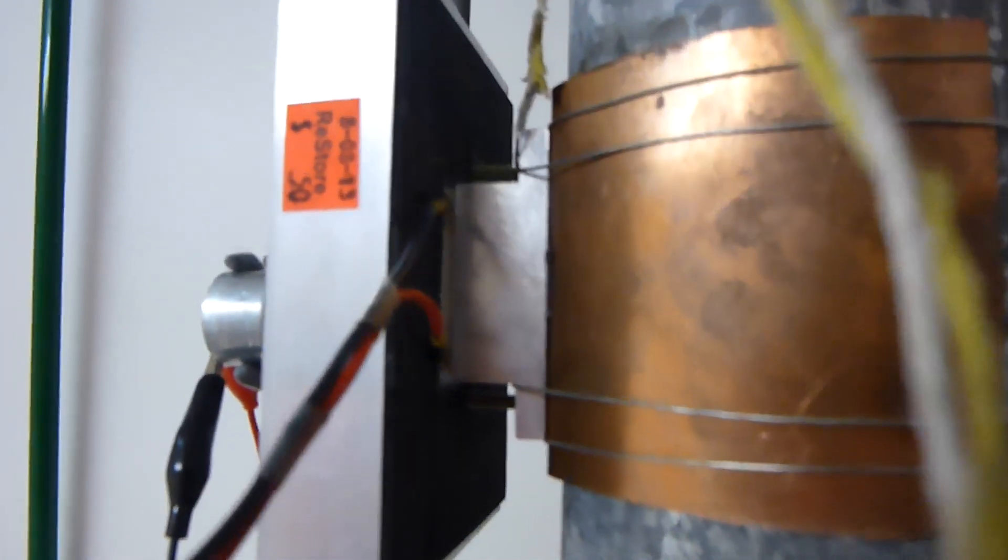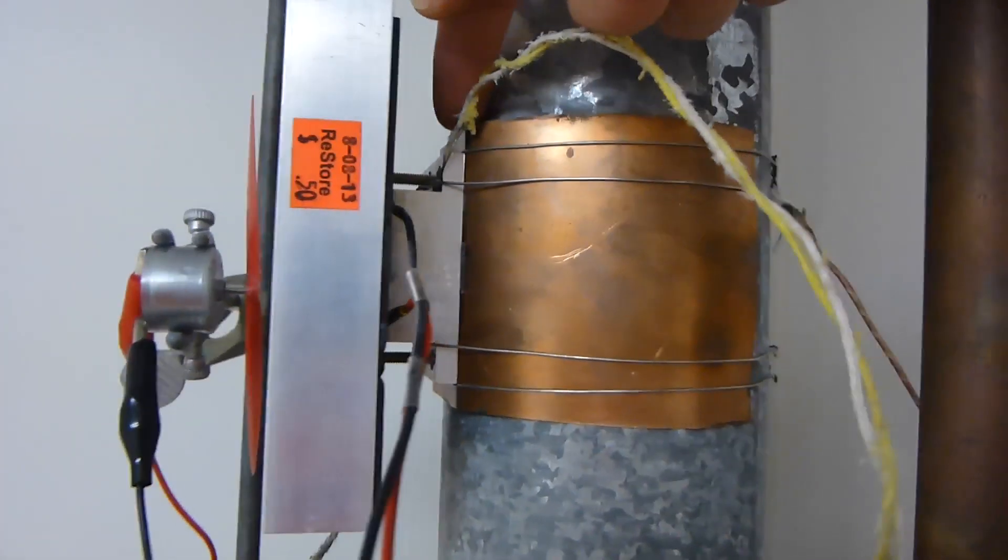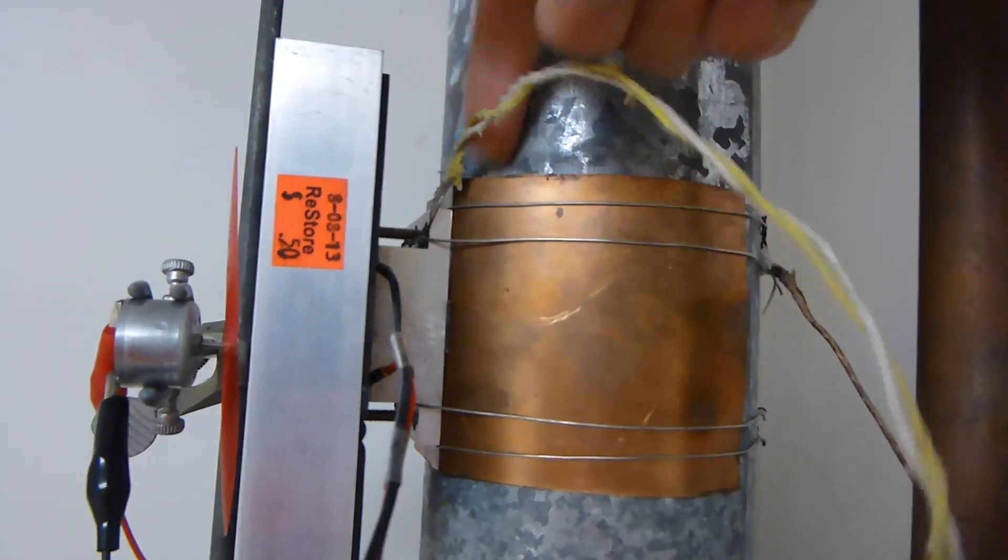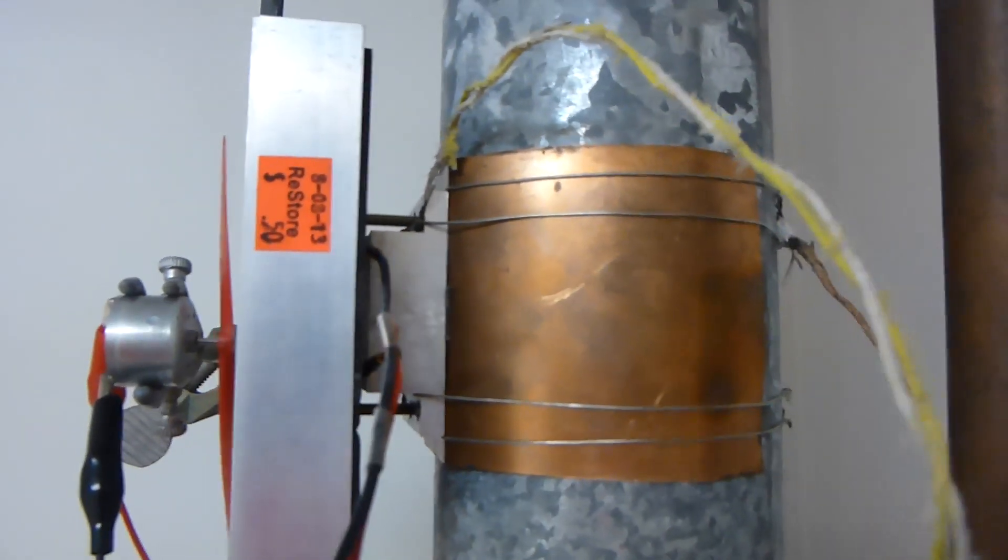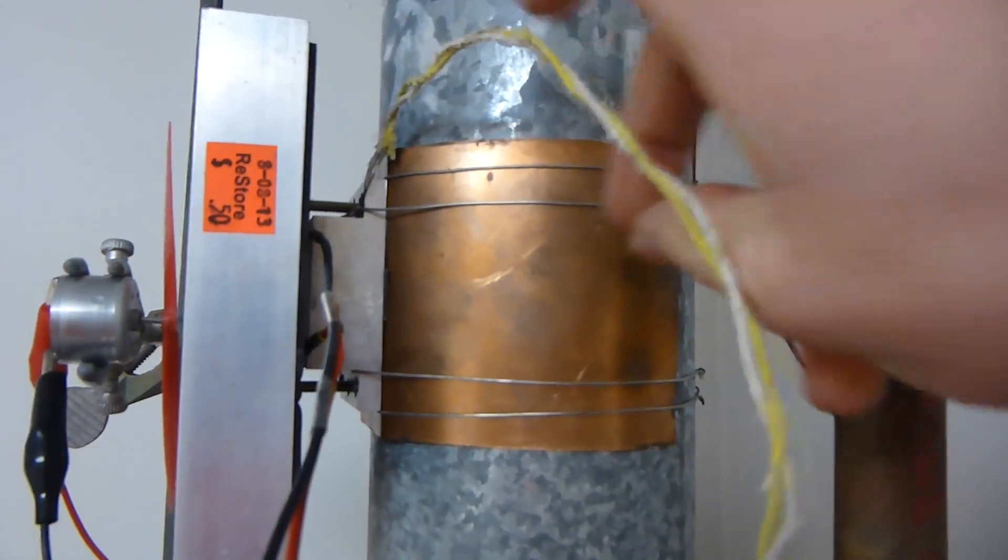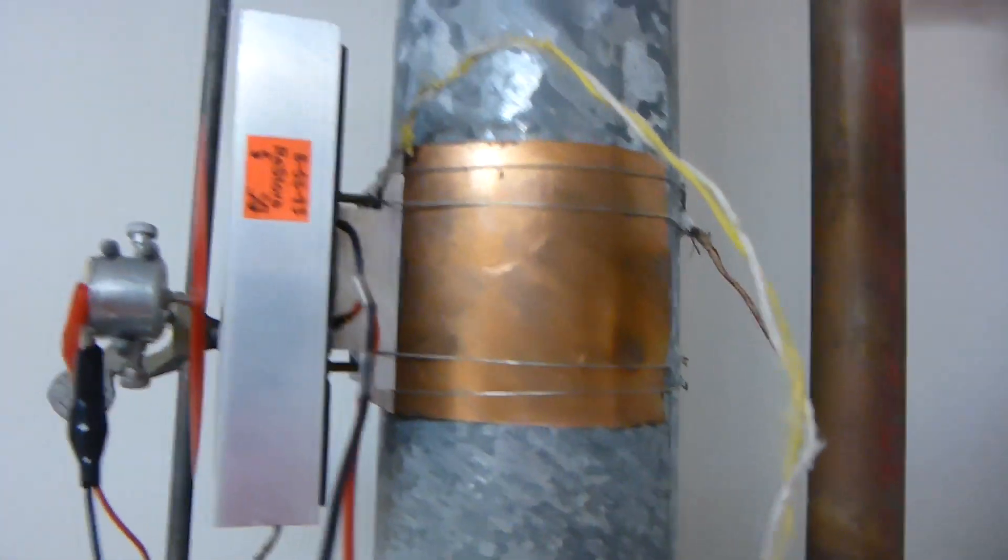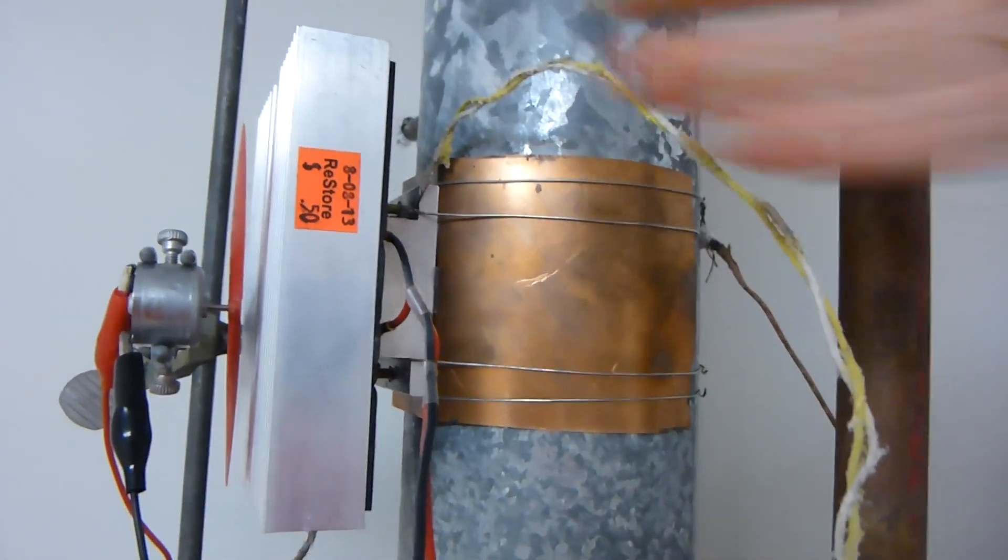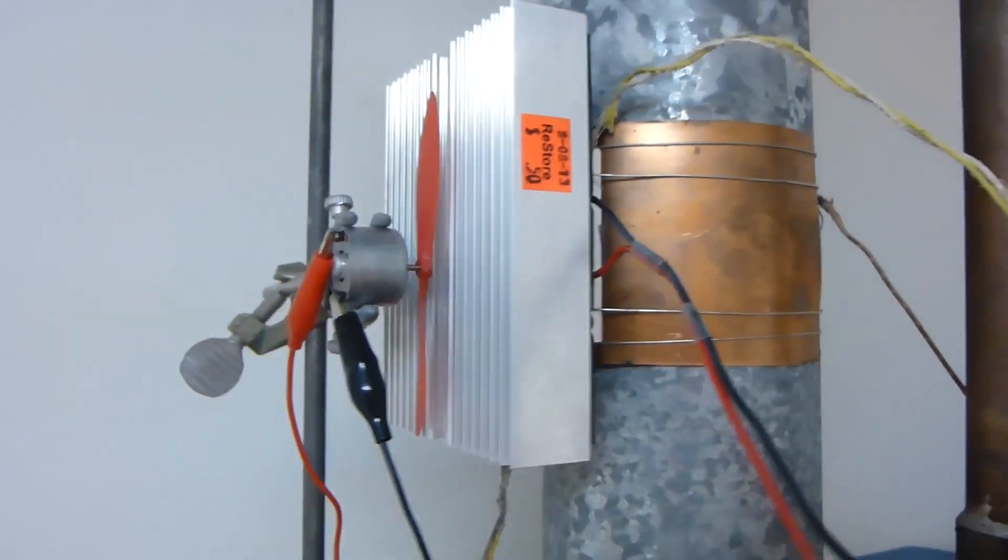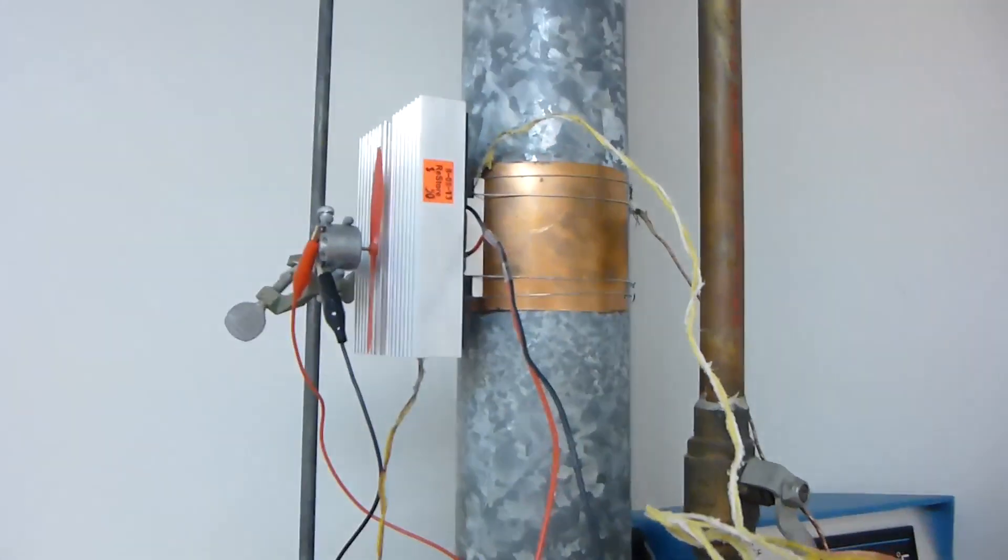So basically I just took my thermoelectric cooler and Peltier cooler and stuck that on there. This is probably about a 60 watt cooler, I'm not really sure. So basically I took this aluminum sheet, fairly thick stuff, and screwed that onto the back of the aluminum so that has a good thermal contact there. And then I just kind of wrap some wire around the flue and that kind of holds the copper on there.